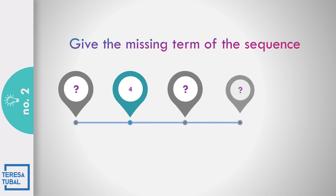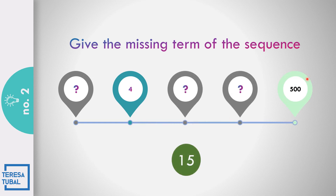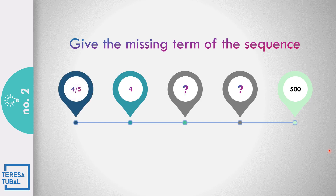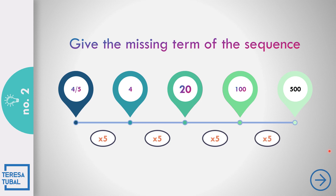How about number 2? Solve the missing term of the sequence: the first term is 4 and the last term is 500. I give you 15 seconds. The answer is 4 over 5, 20, and 100, because the common ratio is equal to 5. So 4 over 5 times 5 is 4. 4 times 5 is 20. 20 times 5 is 100. 100 times 5 is 500.